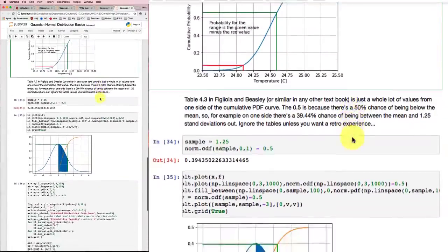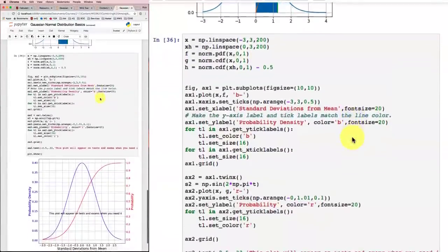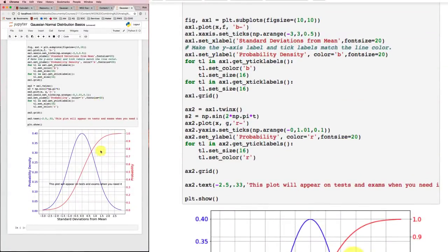So use these functions to figure out what the probabilities are. And if you need a curve to be able to visualize what's going on, then this plot down here made from this code here gives you both the PDF on this axis over here that goes up to about 0.4 and the CDF, the cumulative density function, on this axis over here that goes up to 1.